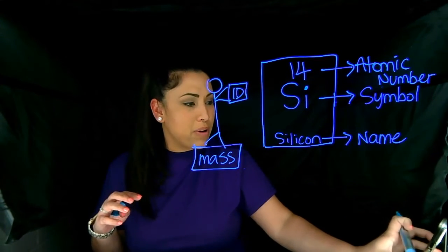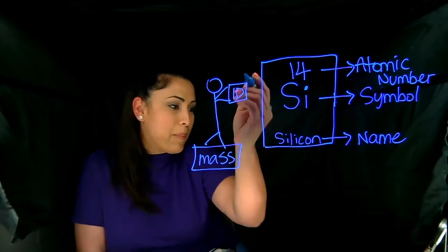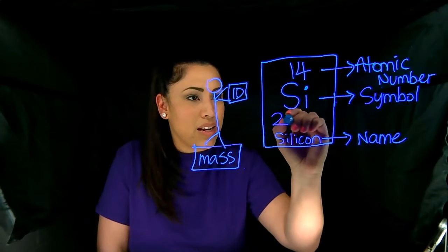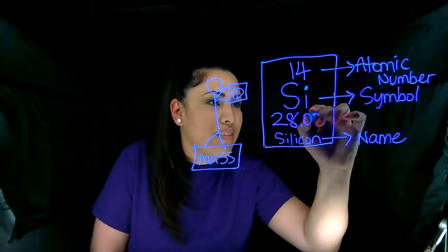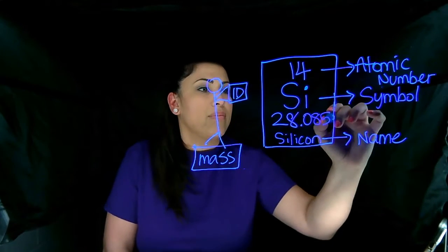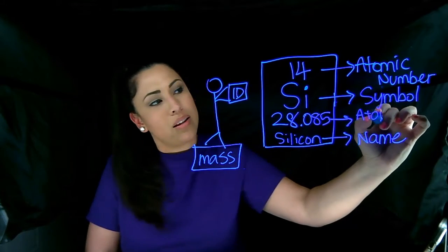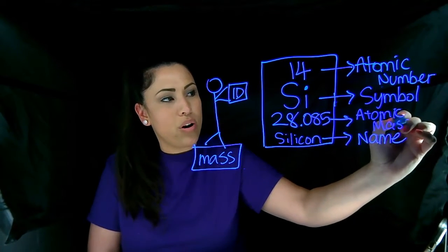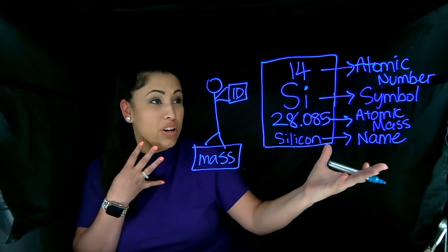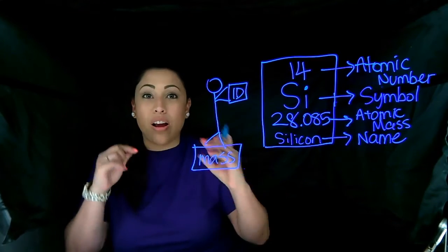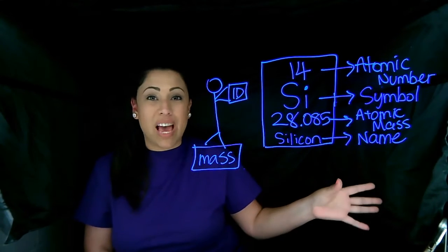Now the bottom number I said was going to be the mass. So if you look at a periodic table, you will see the mass for silicon is 28.085. And again, this is the atomic mass, or we just call it mass for short. Now that is how you would look for the information on one of the periodic table tiles or the squares for each of the elements.